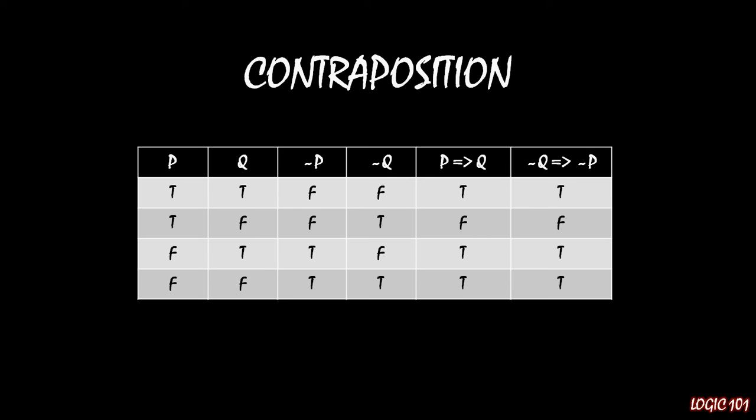It's only in the second row where not Q is true and not P is false. If we look at the regular implication and the contrapositive of it, columns five and six, we see that the first row is true, the second row is false, the third row is true, and the fourth row is true. The truth values are exactly the same going down the rows. These are logically equivalent statements.